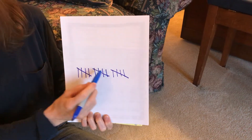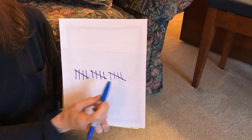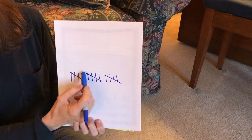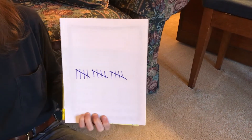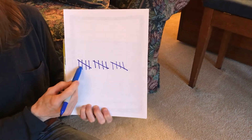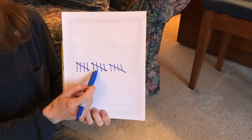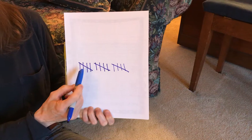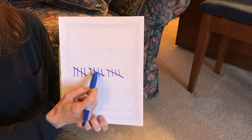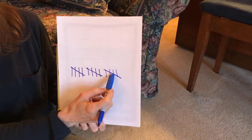So every fifth mark will go across. Once you get four, then the fifth one goes across. Now we can see the groups and we can count by fives: five, ten, fifteen.